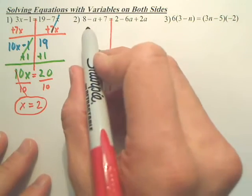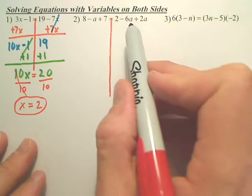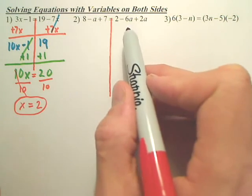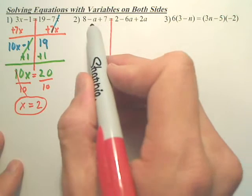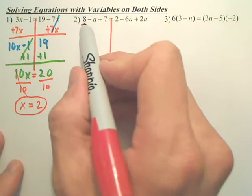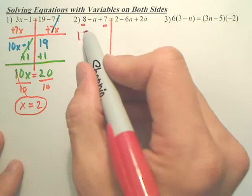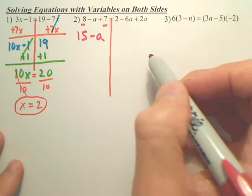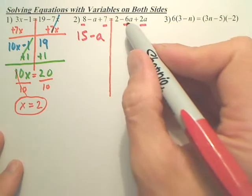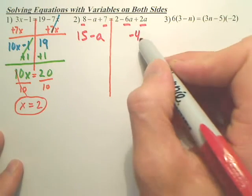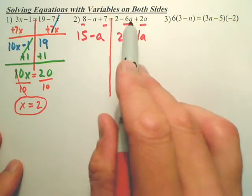Now here, we want to do the same thing, but before we get the variables to one side, you first have to simplify each side. So look over here, can we simplify anything? Can we combine anything? Yes. Don't those combine? Yes. 8 and 7 gives you 15. Over here, the a's combine. Negative 6 and 2 gives you negative 4a and then bring down the 2. So over here we combine the 8 and 7, over here we combine the 2 a's. Now we're nice and neatly simplified.